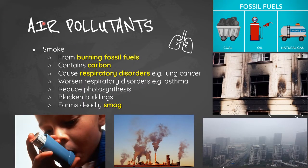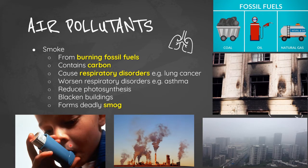The first air pollutant we'll look at is smoke. Air pollutants are substances found in the air that are detrimental or harmful to the environment. Smoke comes from burning fossil fuels, contains carbon, and can cause respiratory disorders — diseases that affect the respiratory tract, such as the lungs, including lung cancer. It can also worsen conditions like asthma, and reduces photosynthesis, a plant's way of making food, and can blacken buildings.